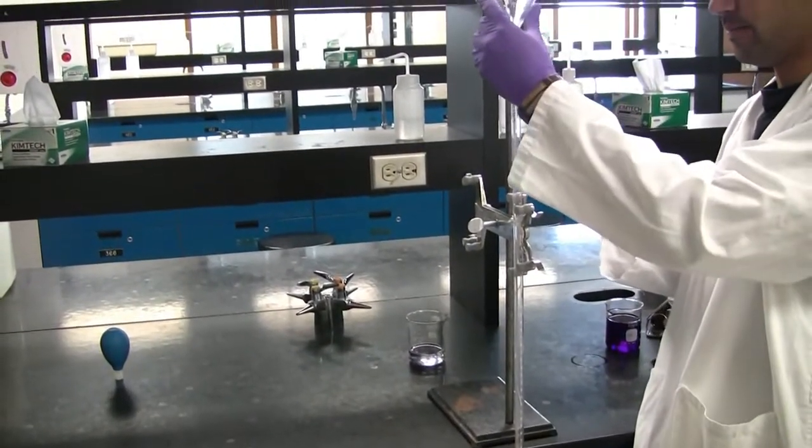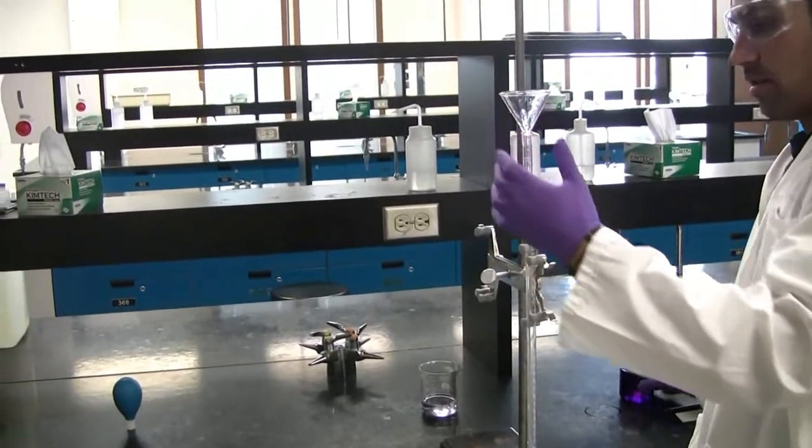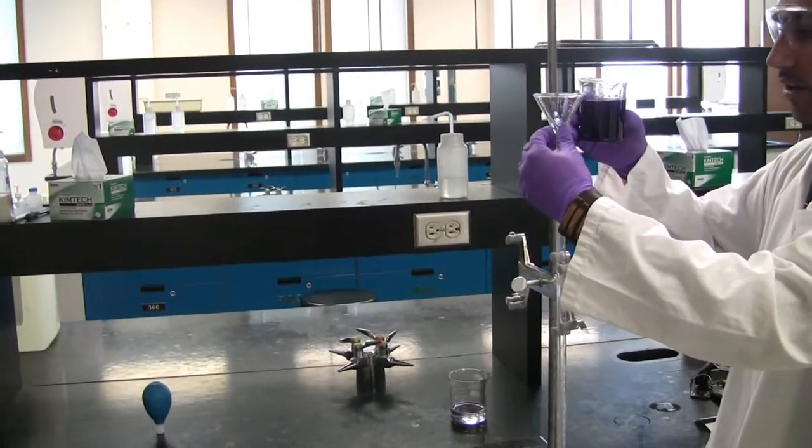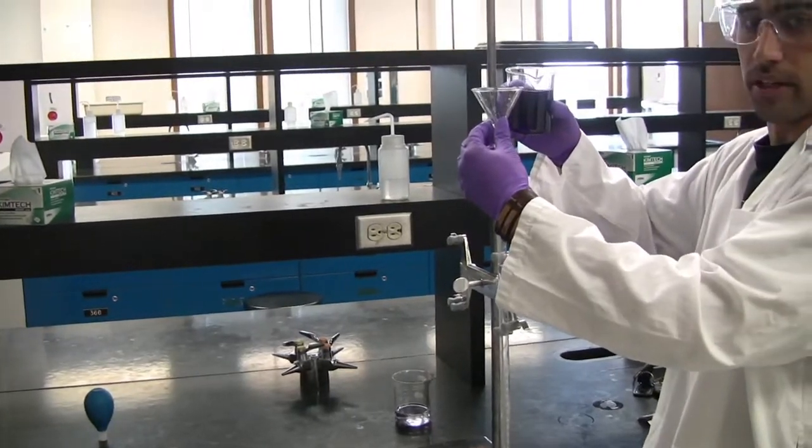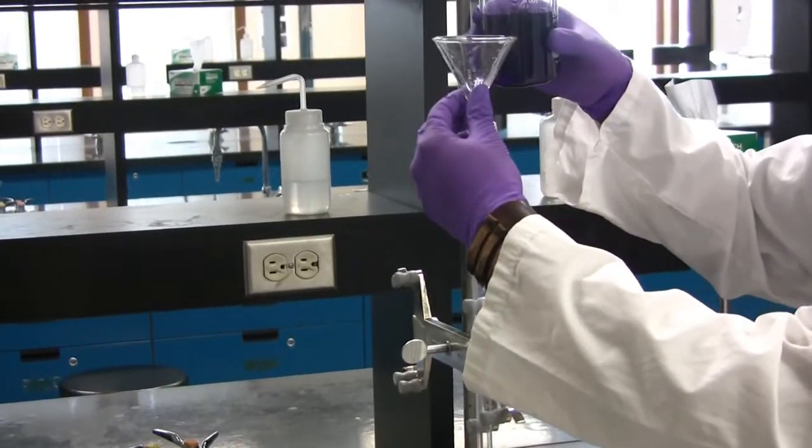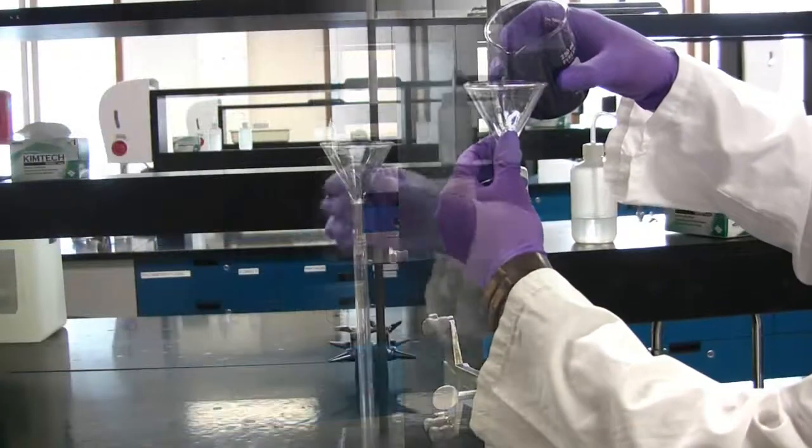Take a funnel and place it at the top of the burette. Next, you want to add about 10 to 20 milliliters of the solution. Remove the funnel.